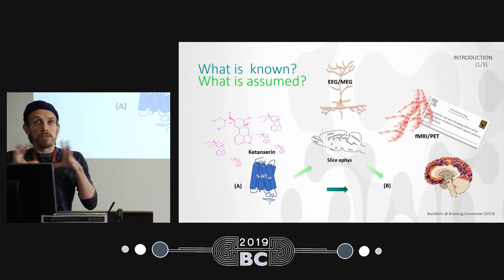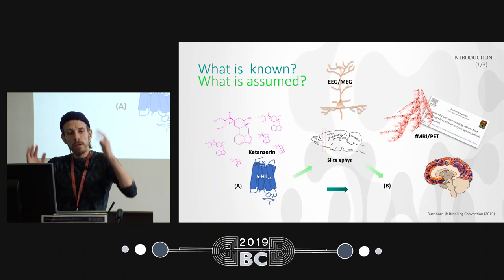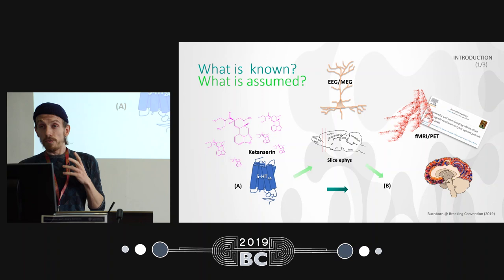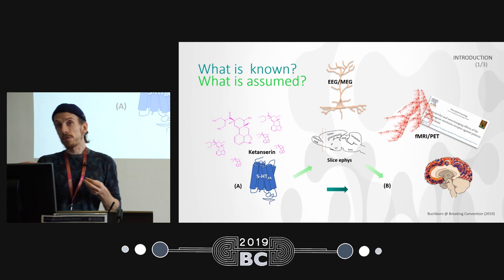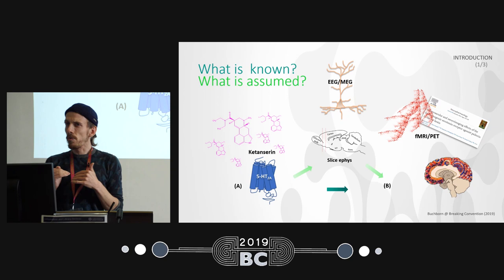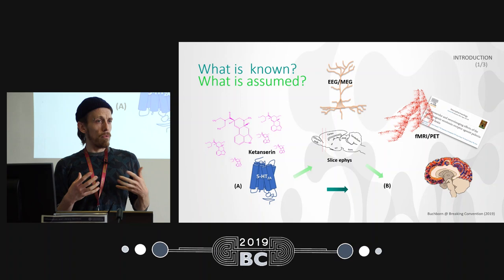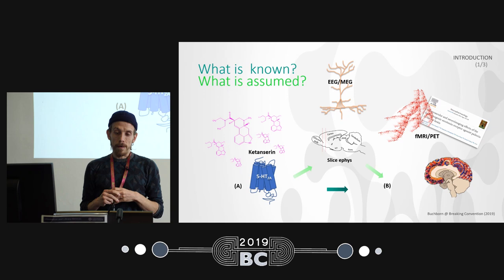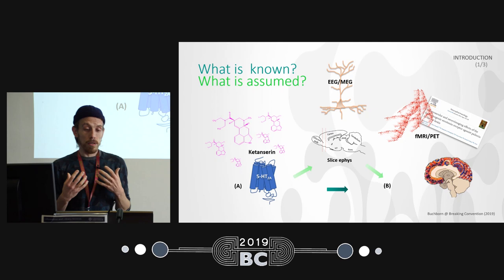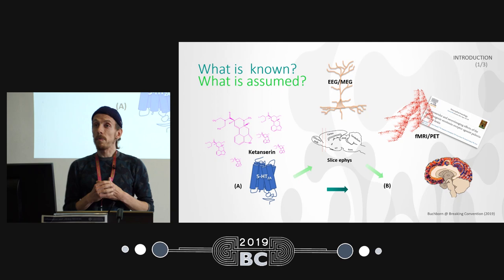These cells are called pyramidal cells — very large cells found in the outer layer of the brain. We assume they play a role because a lot of human research is based on EEG and MEG, which draw signals from these cells mostly. Unfortunately, neither EEG nor MEG can differentiate the different layers of the cortex, so it's a summative value. fMRI and PET are also used but they measure blood flow parameters rather than neurons directly, and since serotonergic hallucinogens are vasoactive, there is skepticism associated with this.